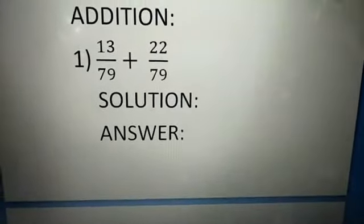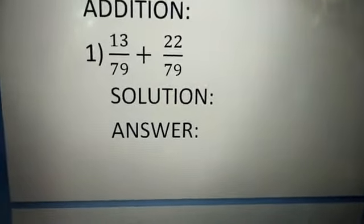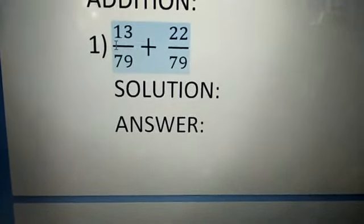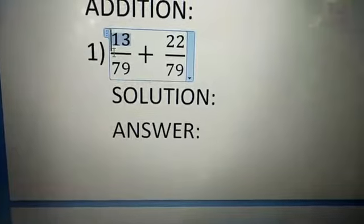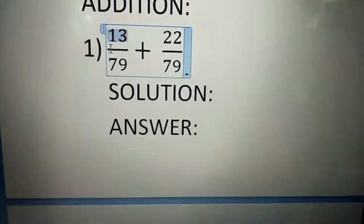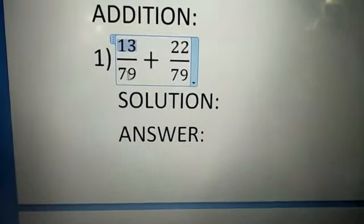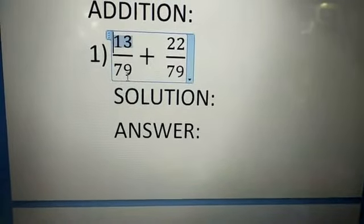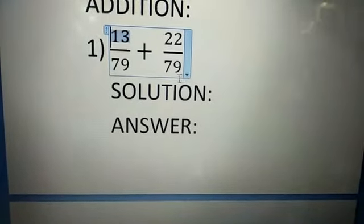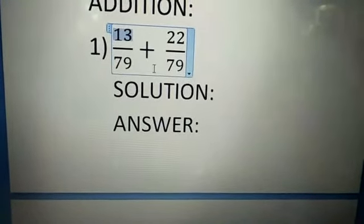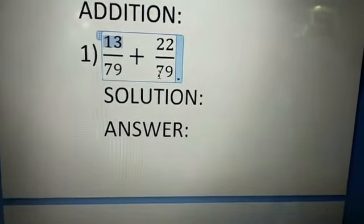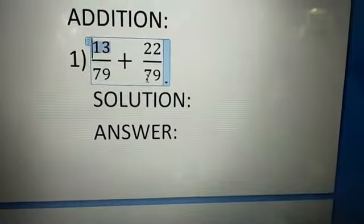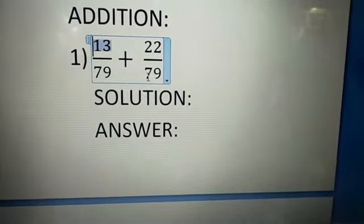Our next heading is addition. Given the problem: 13 divided by 79 plus 22 divided by 79. You see, children — our denominator is the same. Both denominators are 79, so we can add it directly. We don't need to take any LCM.